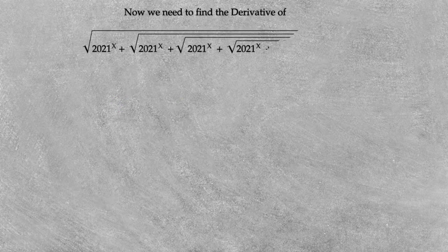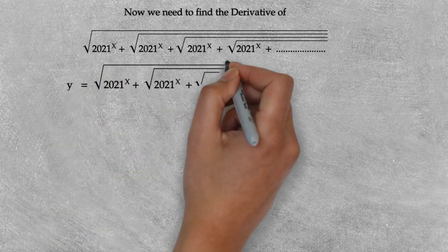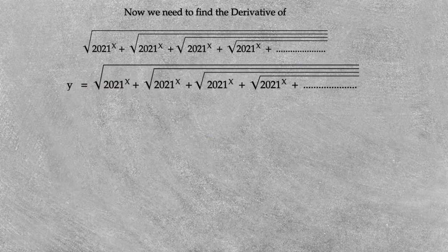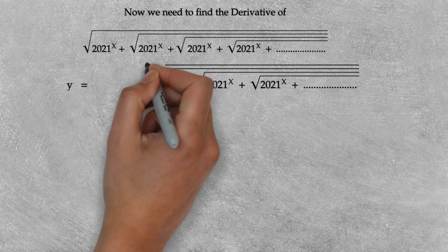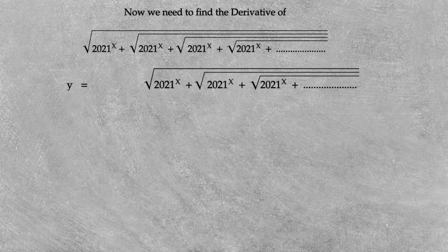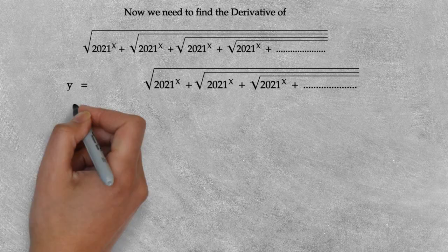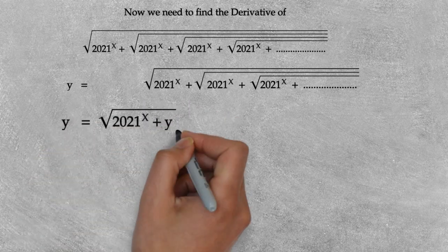Let's move to the second part. We need to find the derivative of the infinite nested square root function. Let y equal this function. This is a little bit tricky — it's an infinite series, so here's a trick: erase or forget one term of this infinite series. There's no impact on the series if we remove one identical term from an infinite series. So we can still call the remaining expression y, and write: root of 2021 to the x power plus y equals y.